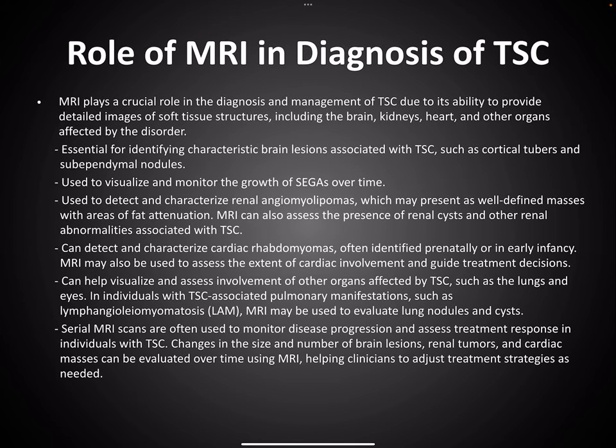MRI plays a crucial role in diagnosing TSC. Brain imaging provides diagnosis of cortical tubers, subependymal nodules and SEGA, and can also be used to monitor SEGA over time. Renal angiomyolipomas are detected on abdominal imaging, and cardiac imaging helps pick up cardiac rhabdomyomas.